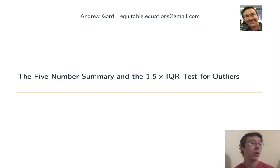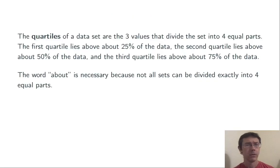Hey everybody, today we're talking about the five-number summary and the 1.5 times IQR test for outliers. First we need a definition.